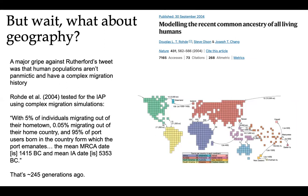This math was done. In 2004, Chang is a senior author on this paper, Modeling the Recent Common Ancestry of All Living Humans. They tested for the identical ancestor point using complex migration simulations based on our current understanding of human migrational patterns. With 5% of individuals migrating out of their hometown, 0.05% migrating out of their home country, the mean most recent common ancestor is 1415 BC, and the mean identical ancestor date is 5353 BC. That's about 245 generations ago. In just a few thousand years, we have already reached the identical ancestor point for all humans alive, irrespective of where they are today.